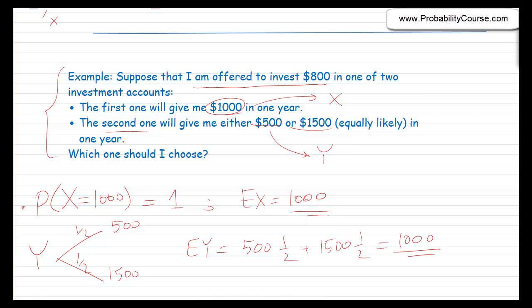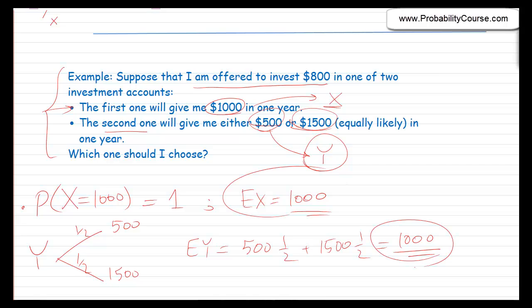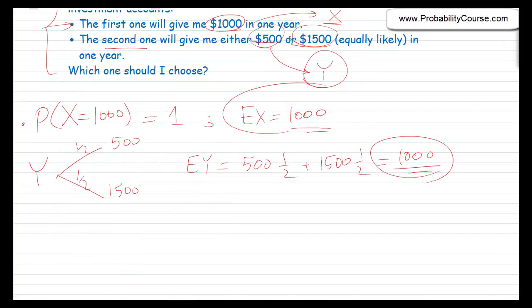If I look at the expected value, I get the same number for both. However, these are completely different investments. If you just look at the expected value, we cannot distinguish between them. So how do we address this issue?